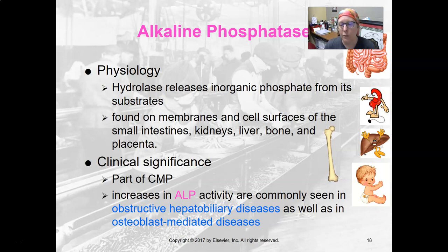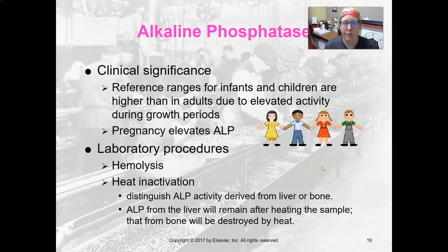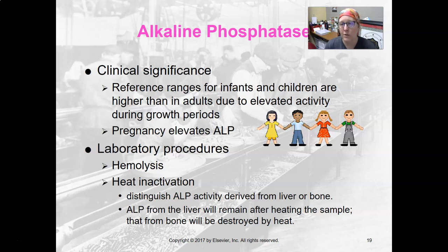Alkaline phosphatase is also increased with bone diseases — any kind of osteoblastic disease, bone cancers, and things like that. Being part of the placenta, you would also see it elevated in pregnant women, and that would be physiologically normal. Because it's related to bone, you can also see increases in growing children, so reference ranges for infants and children are higher. If a patient is not a child, not an infant, and not pregnant and has high alkaline phosphatase, then you could be looking at gallstones or biliary tract disease. You also want to avoid hemolysis, and heat inactivation can help distinguish the source of alkaline phosphatase as liver or bone.